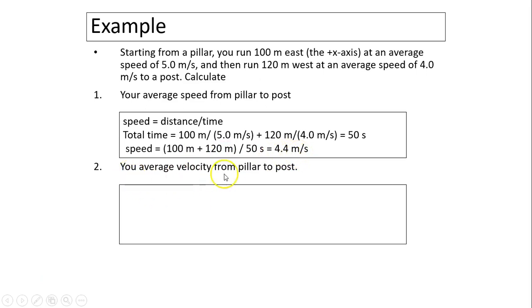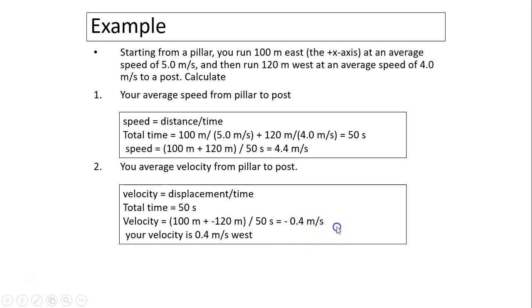Next question is, what is your average velocity? Average velocity is displacement over time. The total displacement is 20 meters west. So total displacement is 20 meters west, negative 20 divided by 50, so you have negative 0.4 meters per second. This negative really means west, so your velocity is 0.4 meters per second west.